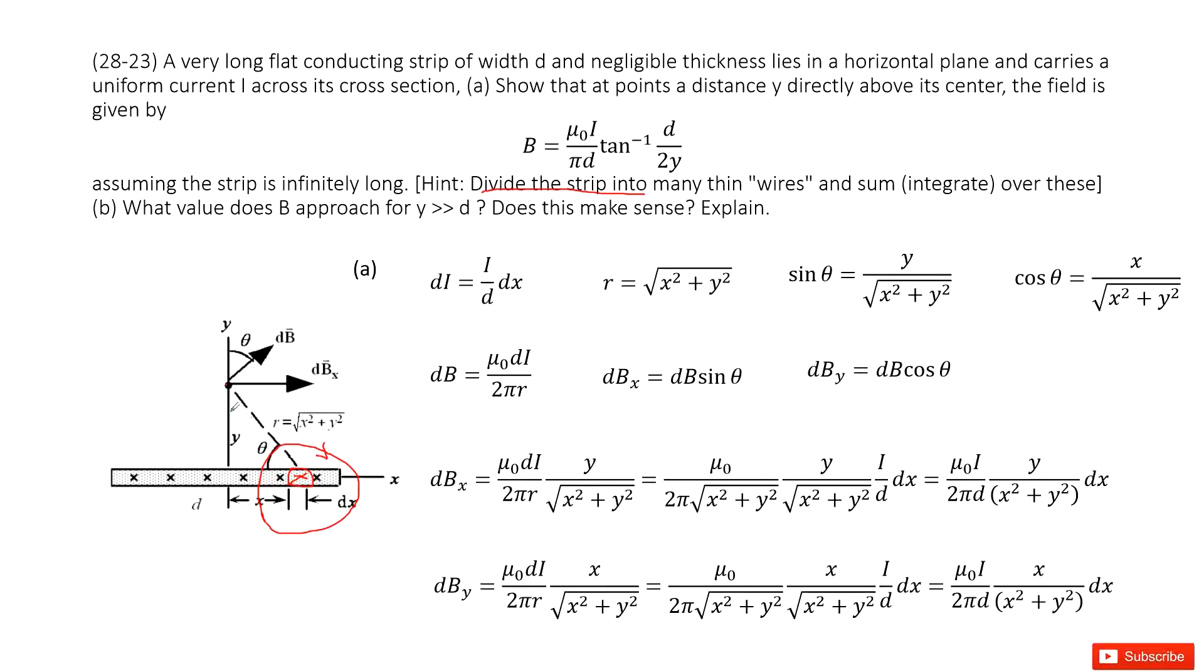You can see theta plus this green angle is 90 degrees, and this theta plus this green angle is 90 degrees. So theta equals theta.